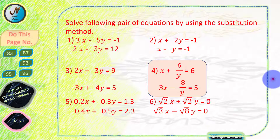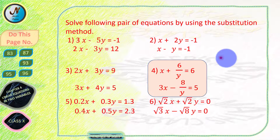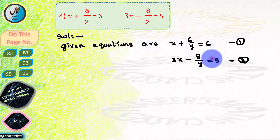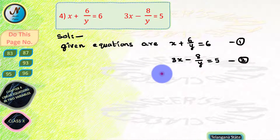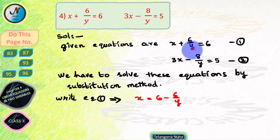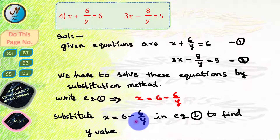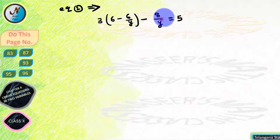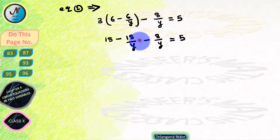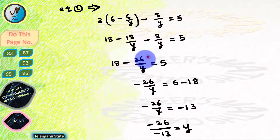Now we solve page number 92, problem 4. Two linear equations are given. The equations are: x plus 6 by y equals 6 — let this be equation 1 — and 3x minus 8 by y equals 5 — let this be equation 2. To solve by substitution method, we write equation 1 as x equals 6 minus 6 by y, by transposing 6 by y to the RHS. Substituting in equation 2: 3 into (6 minus 6 by y) minus 8 by y equals 5. By distributive law, 3 times 6 equals 18 and 3 times 6 by y equals 18 by y.